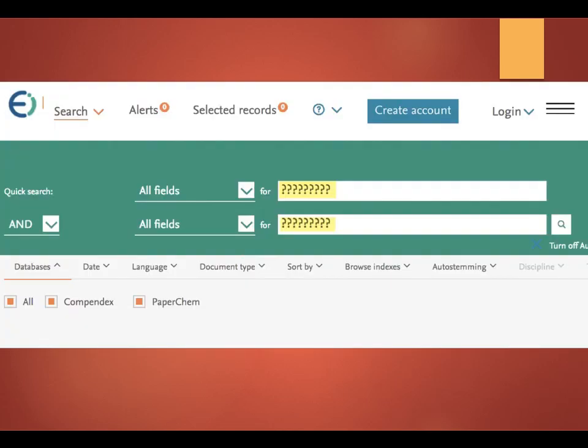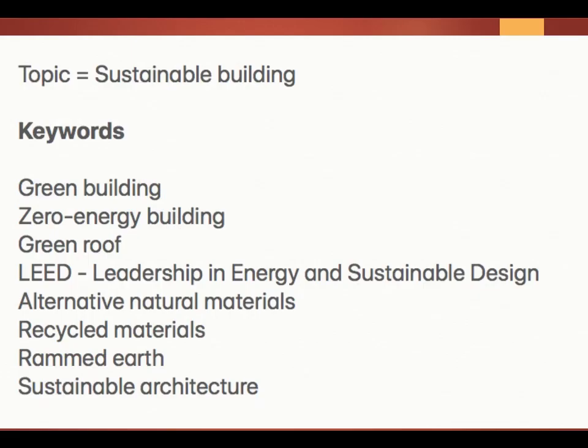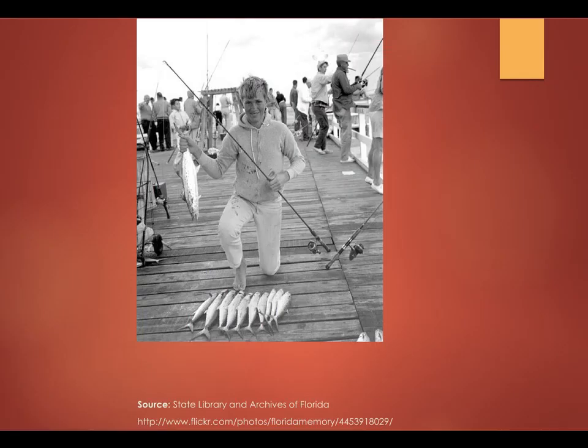Before you can do an adequate search on your topic in any online database or search engine, you have to have a list of search terms or keywords. Think of keywords as the bait you use to catch the fish you want. To catch the right fish, you need the proper bait.